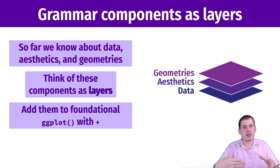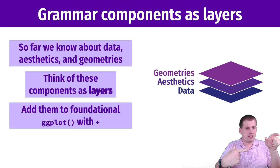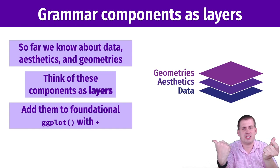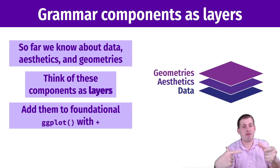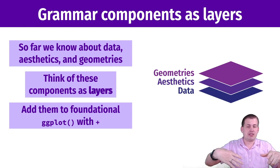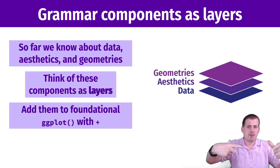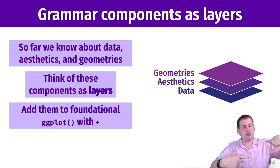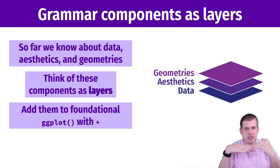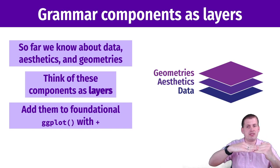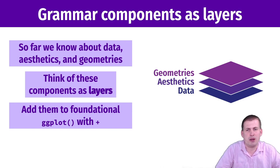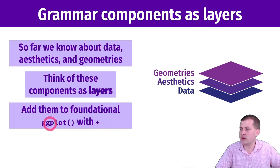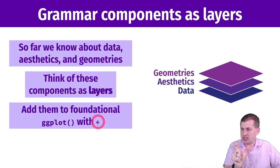So we say take that troops data, set x as latitude and y as longitude, map size onto survivors, map direction onto color, and then use a path to plot that. We're taking the data, mapping the aesthetics, and adding geometries — those three layers. In actual ggplot code, you just add each of those functions with a plus sign, like ggplot plus geom_path.